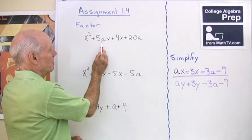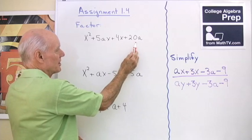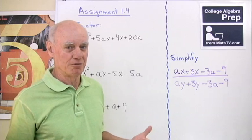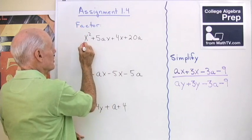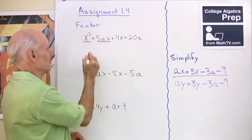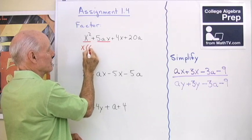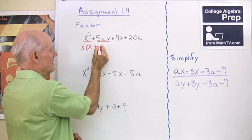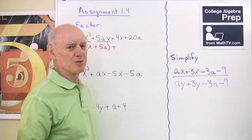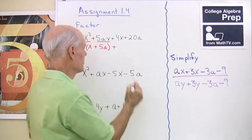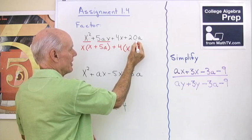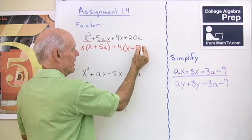I want to factor x squared plus 5ax plus 4x plus 20a. So I notice right away there's four terms, so I'm going to give this factoring by grouping a shot. So I just look at my first two terms, and I see that they have an x common to each term, so I factor that out. x times what's left is x plus 5a. Now I go to my second two terms, and I notice that they have a four common, so I factor that out. When I factor out of this term, what's left is x. I factor it out of this term, what's left is 5a.